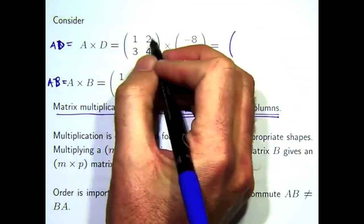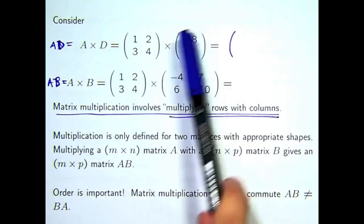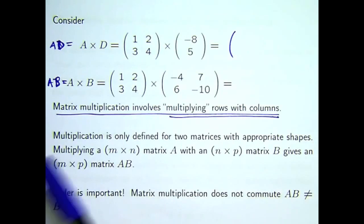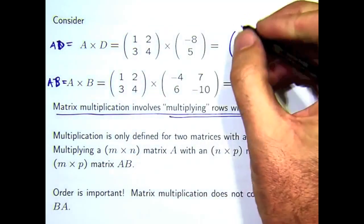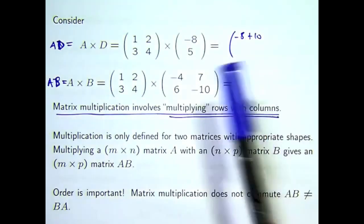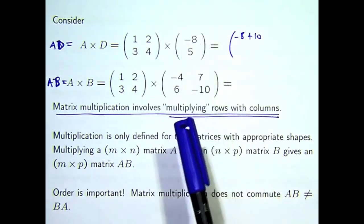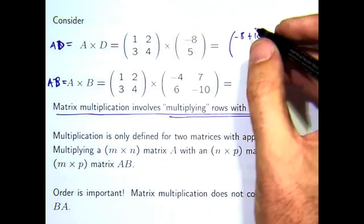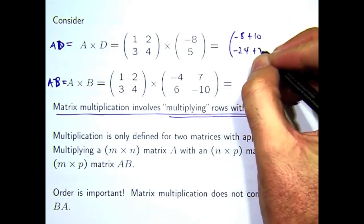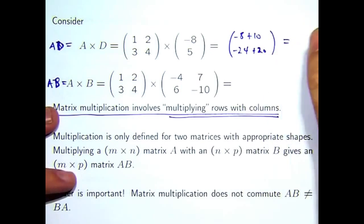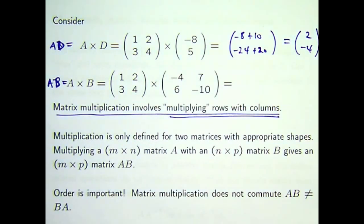I take this row and multiply it by this column. So, it's that times that plus that times that. That will give me one element. So, it's one times minus eight plus two times five. So, that'll be minus eight plus ten. And the other element, three times minus eight plus four times five. Now, you'll notice the answer there is a vector. But, hang on. I'm multiplying a two by two matrix with a vector. And I get a vector. Why don't I get another sort of two by two matrix? We'll get to that in a minute.